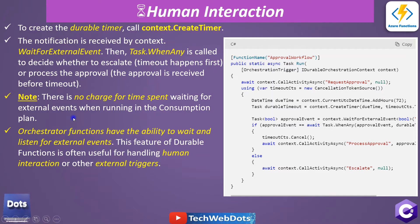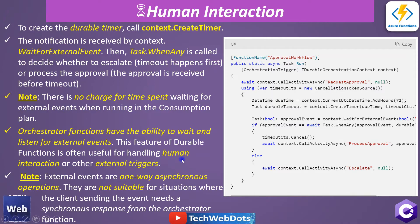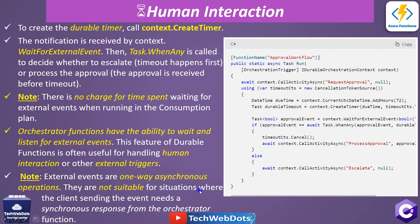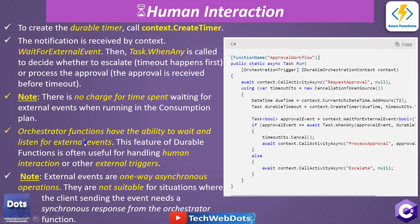Orchestration functions have the ability to wait and listen for external events. This feature of durable functions is often useful for handling human interaction or other external triggers. Another very important point: external events are one-way asynchronous operations — they are not suitable for situations where a client sends events and needs a synchronous response. There is no direct request-response; it is event-based.